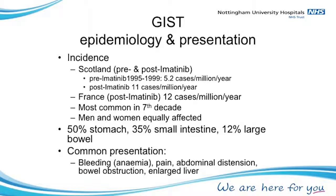The incidence of GIST is very interesting — it increased the moment there was a drug to treat it. GIST quite often used to be classified as a leiomyosarcoma of the bowel, and those patients had a terrible prognosis. Before imatinib came about, in Scotland they only identified about five cases per million per year, because pathologists weren't really looking for it and patients had a terrible prognosis, so it was easy to just say 'this is a sarcoma — we can't do much about the subtype anyway.'